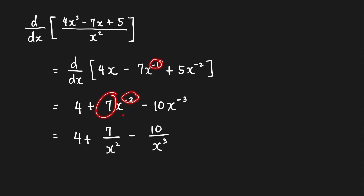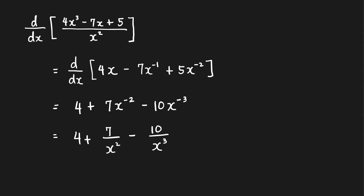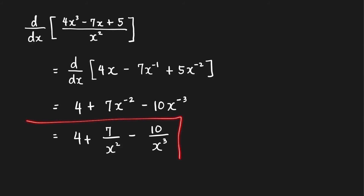The derivative of 5x^(−2) is 5 times −2, giving −10x^(−3). Simplifying the answer by making the powers of x positive: move the negative-power terms to the denominator, and this is our final answer.